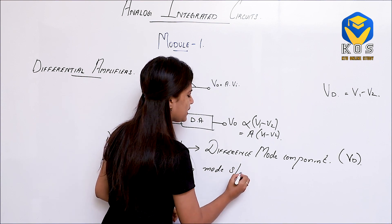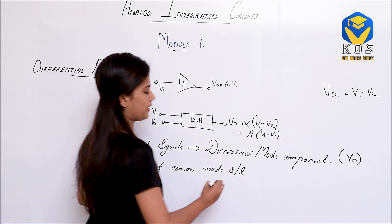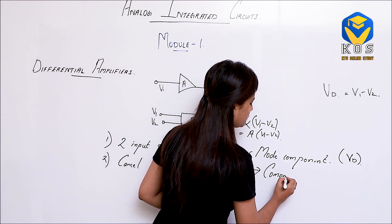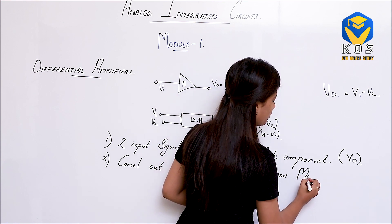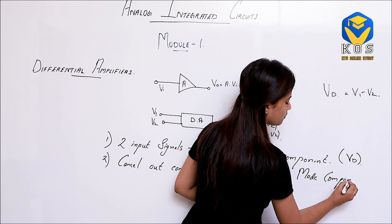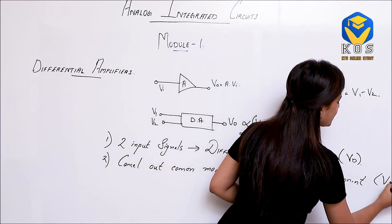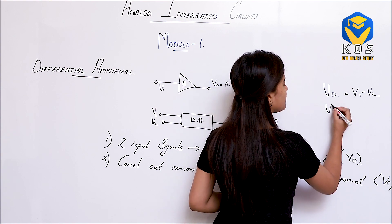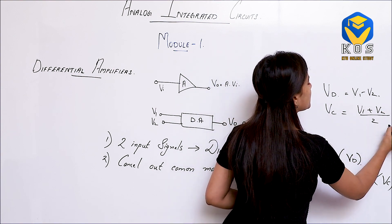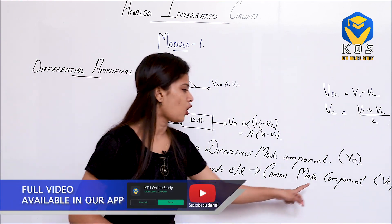We will have another component called the common mode component, represented by VC, where VC will be equal to V1 plus V2 divided by 2. Since we have two inputs, we take the average and call it the common mode component.